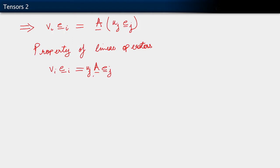Now, observe then that A E_j is a vector itself. Because E_j is a vector and A is a tensor which acts upon vectors to give us another vector. So observe that this is also a vector.